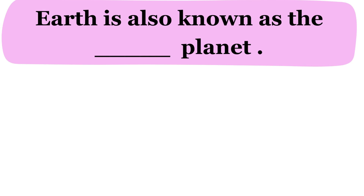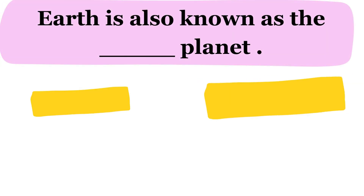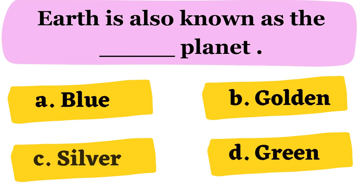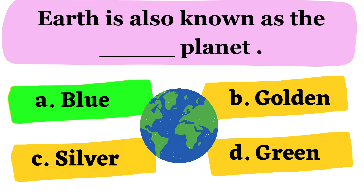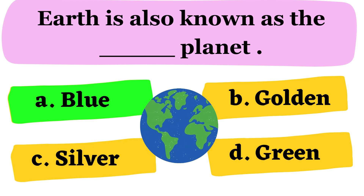Earth is also known as the dash planet. A. Blue B. Golden C. Silver D. Green. The correct answer is option A. Blue.